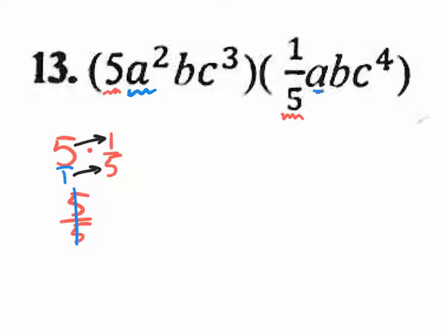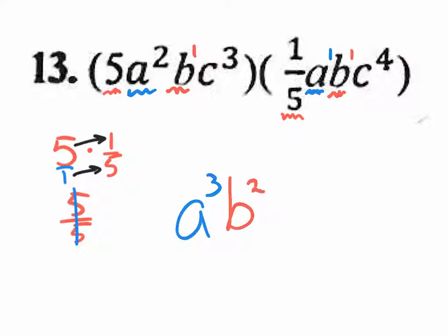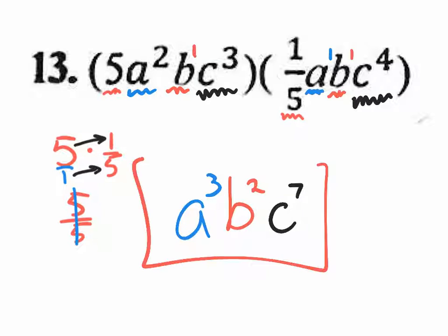Continuing number 13: for the b's, b to the 1 times b to the 1 — add the exponents to get b squared. For the c's, c to the third times c to the fourth — add 3 plus 4 to get c to the seventh. So the final answer is a to the third, b squared, c to the seventh. You can put the 1 coefficient out front from the 5 over 5, but you don't have to.